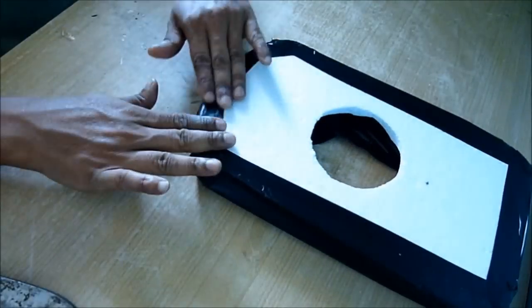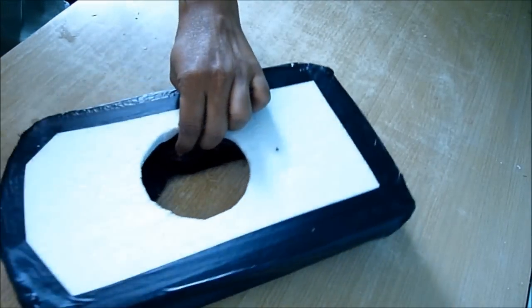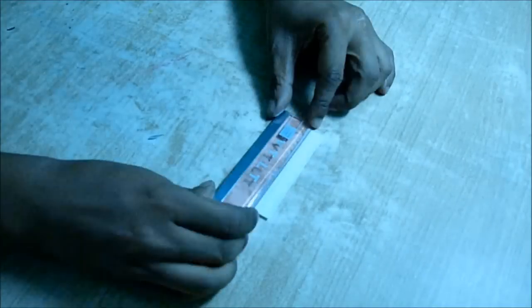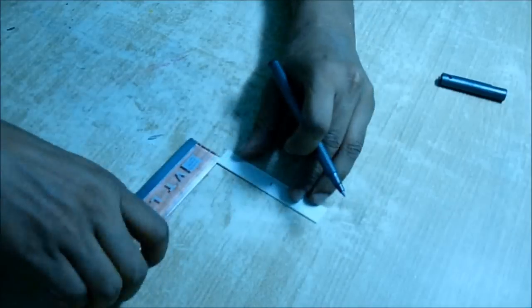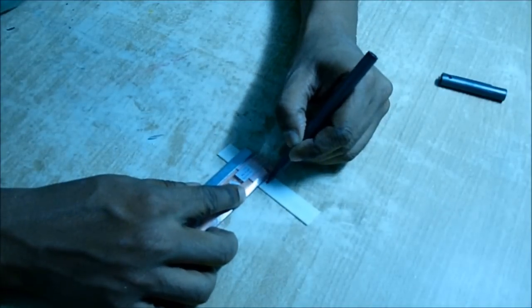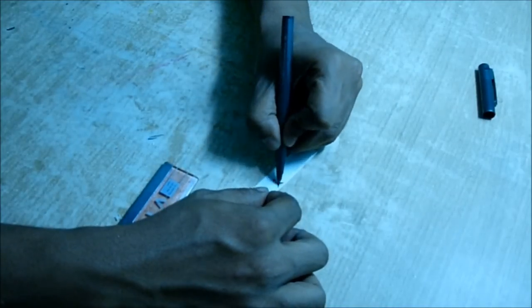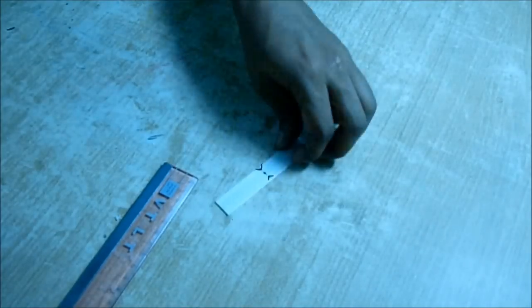Like this, the hovercraft body will look. Now we're going to make a propeller. The length of the plastic is three and a half inches. At the center, cut some angular shape.